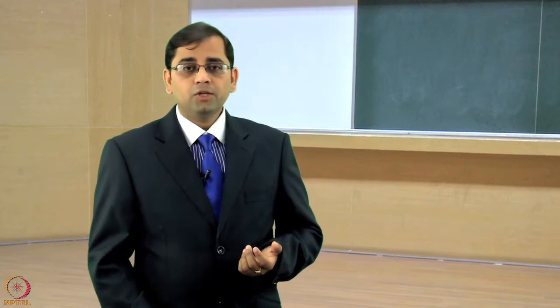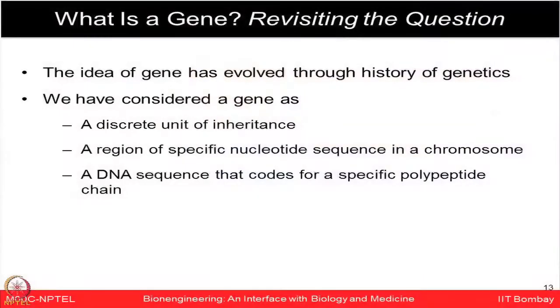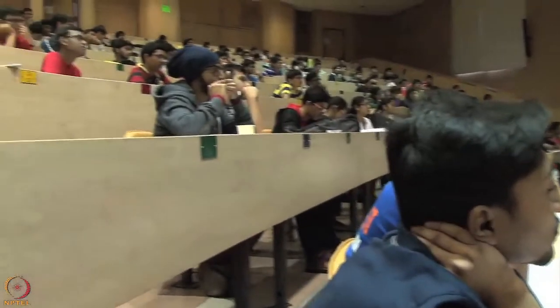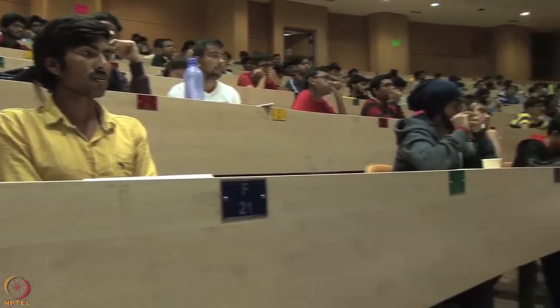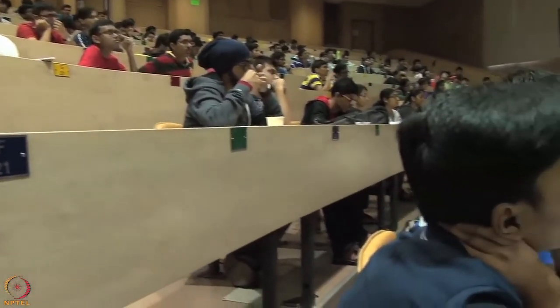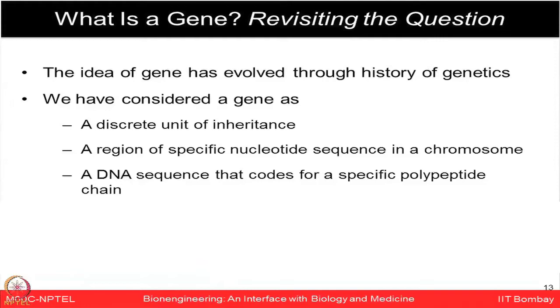After reviewing basic concepts of DNA, let us think about what a gene is. The concept of gene has evolved through the history of genetics. Mendel thought about hereditary factors passing from one generation to the next. Morgan provided experimental evidence that hereditary units are located on chromosomes. Now we know a gene is a discrete unit of inheritance — a region of specific nucleotide sequences in a chromosome, or a DNA sequence that codes for a specific polypeptide chain.